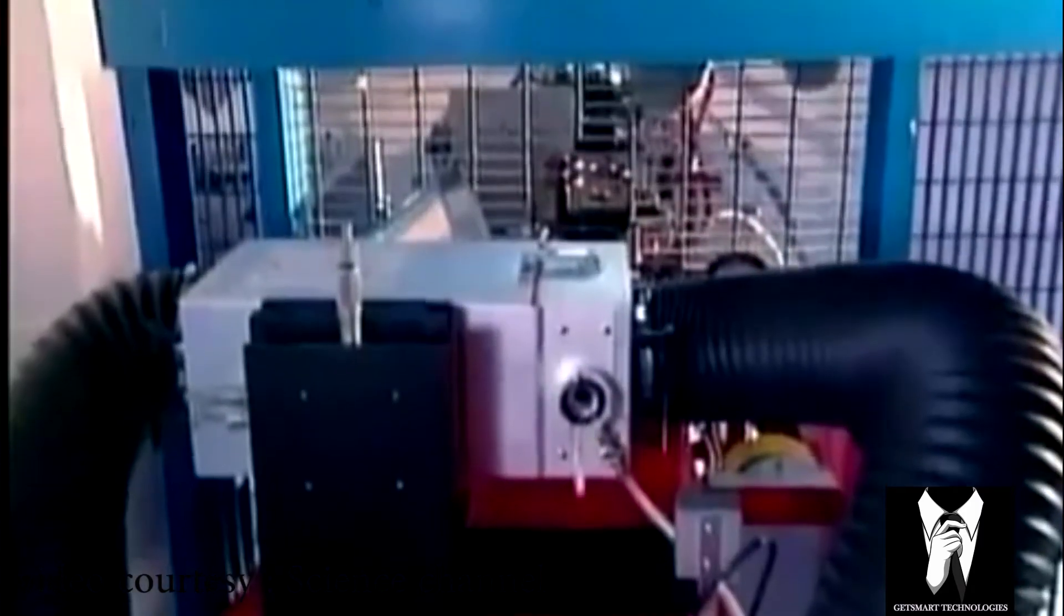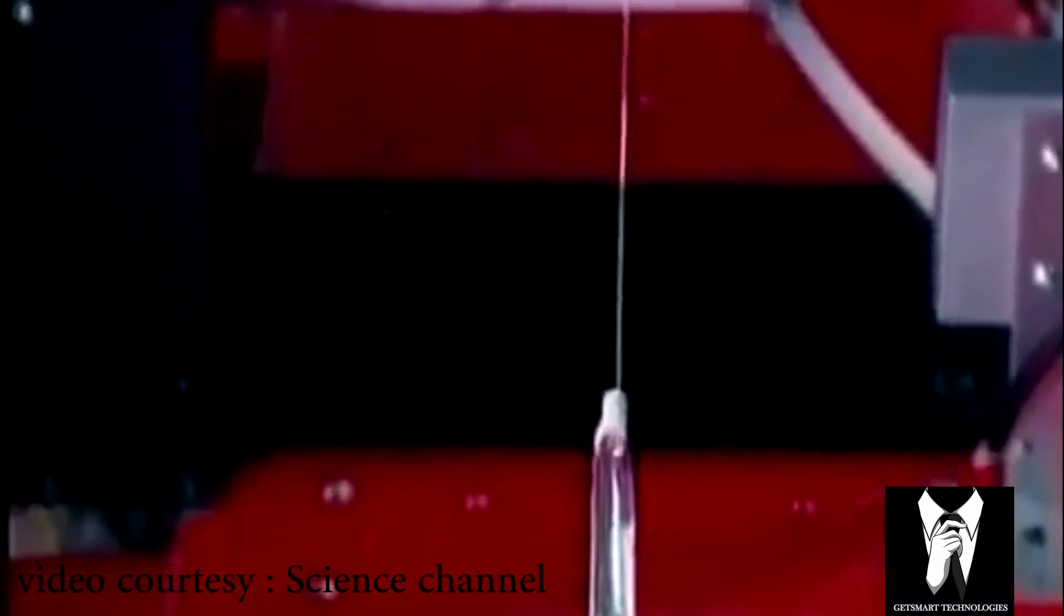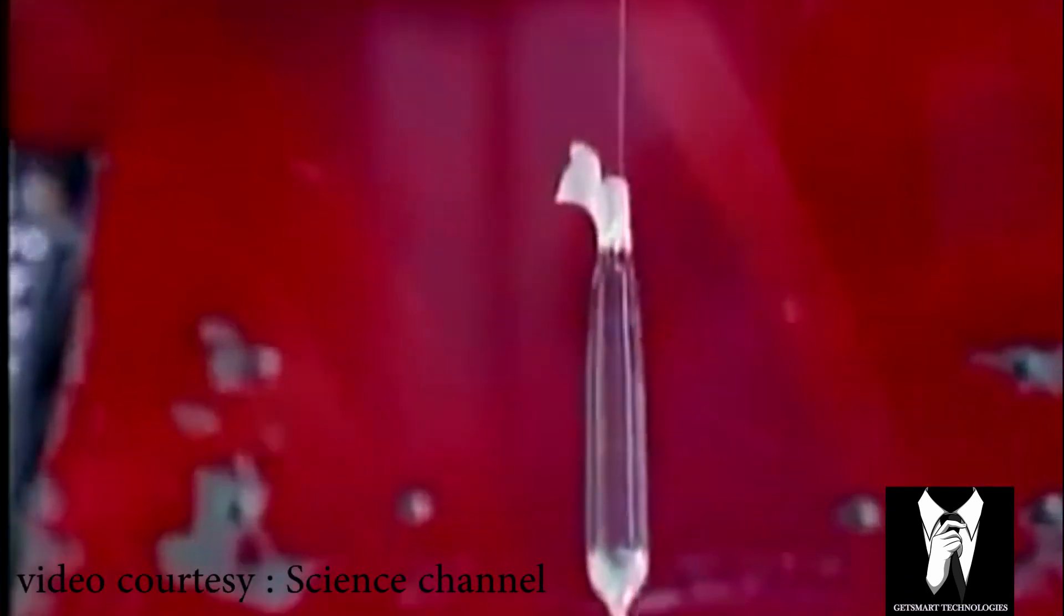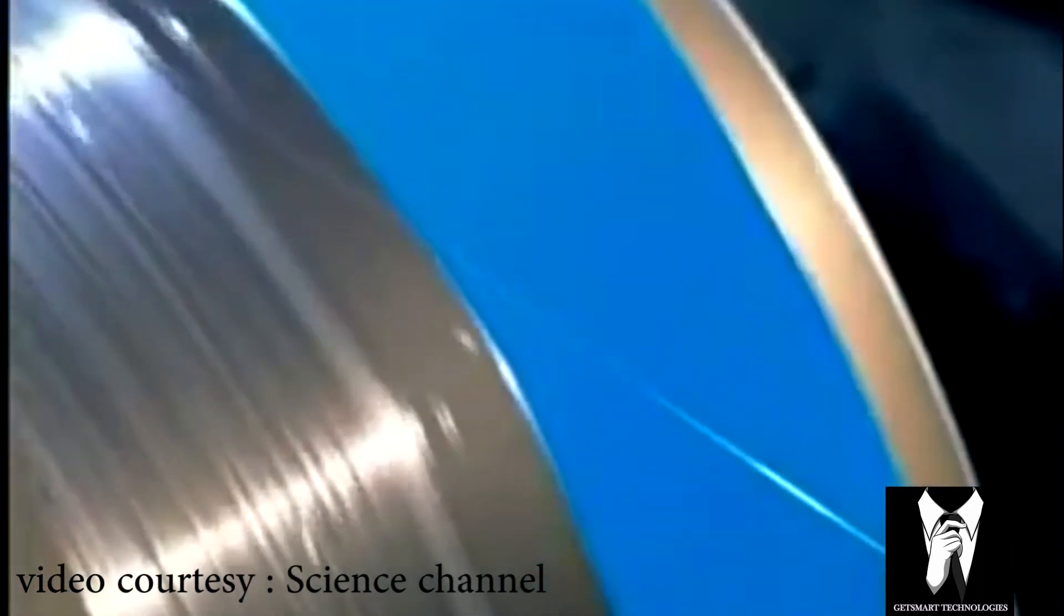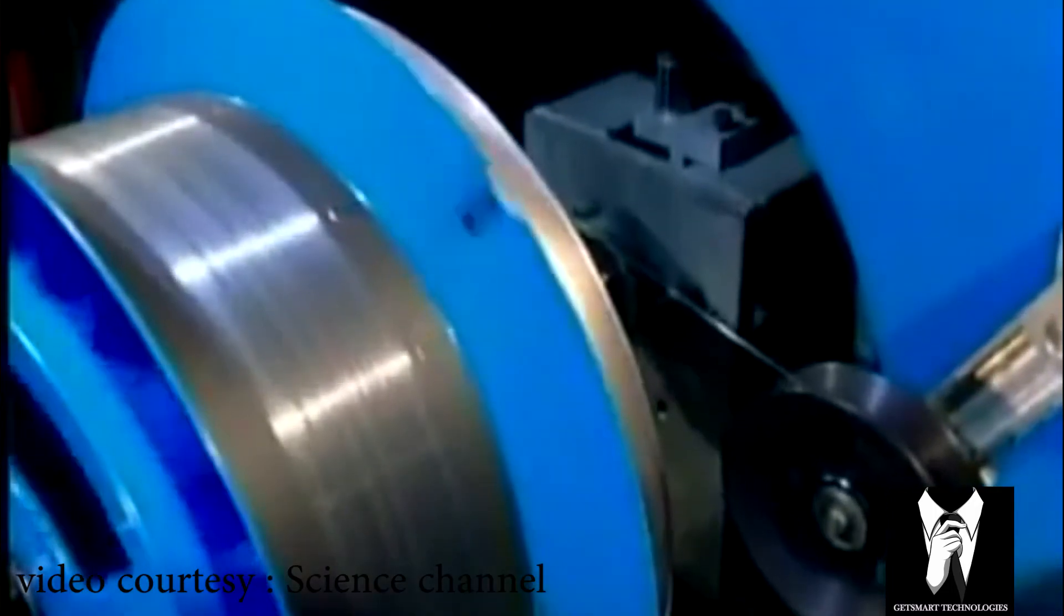Then the fiber passes through UV lamps that bake on an acrylic coating to protect against dust and other contaminants. Finally, the fiber is rolled onto a drum.